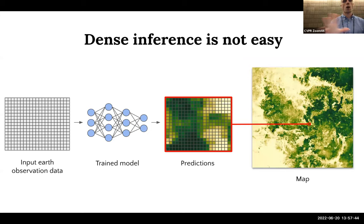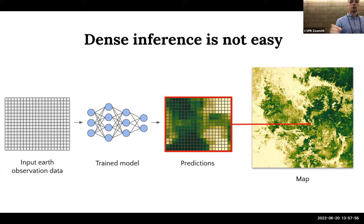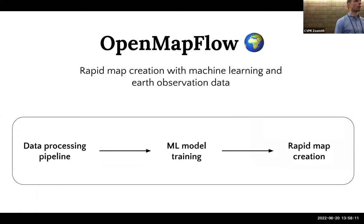Now we'll go over the OpenMapFlow package. We made it because dense inference is not easy — we were spending a lot of money setting up virtual machines trying to make large maps for entire countries. OpenMapFlow is basically meant to make dense inference easy, and it does that through three components: a data processing pipeline, machine learning model training, and the ability to do rapid map creation — in other words, dense inference.